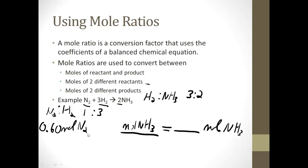So moles NH3 to N2. We have to figure out there's two NH3 to one N2. So now what can we cancel? We can cancel moles of nitrogen. We're left with moles of ammonia. And we have 0.60 times 2, which gives us 1.20. So 0.60 moles of nitrogen will give us 1.20 moles of ammonia. So using mole ratios is actually really simple.